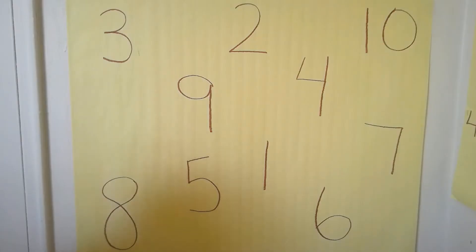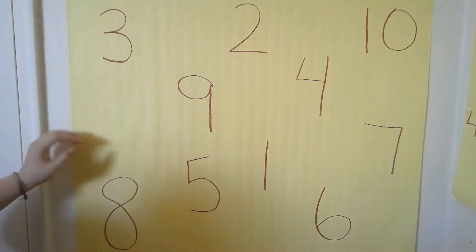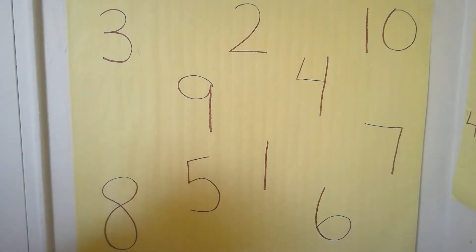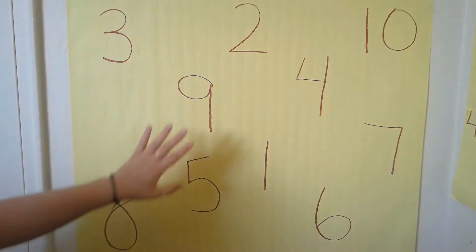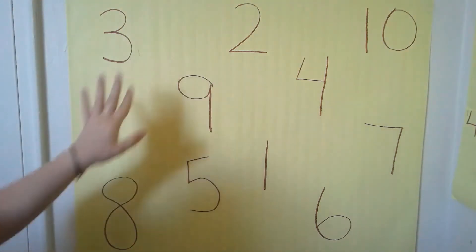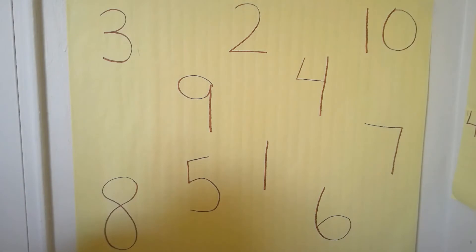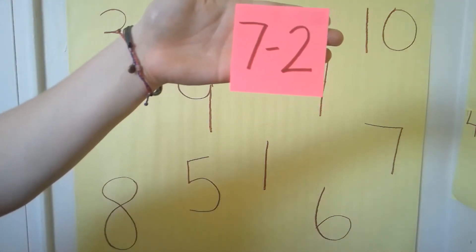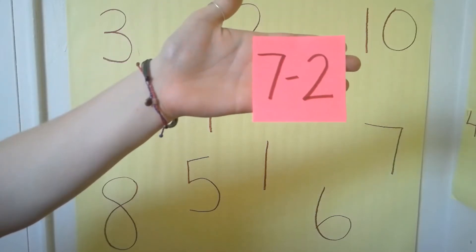For today's lesson, we will be playing the post-it game using post-its and a big piece of paper on the wall. I used my chart paper, but you can recreate this at home using tape and paper to put it up on the wall. I wrote out different numbers between one and ten on the paper randomly. On each of these post-its are different subtraction number sentences. Looking at my sticky note, I see I have the number sentence seven minus two.